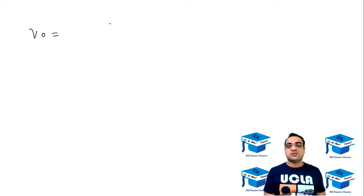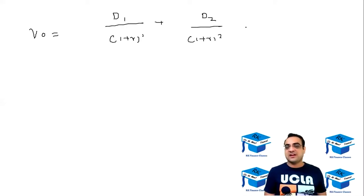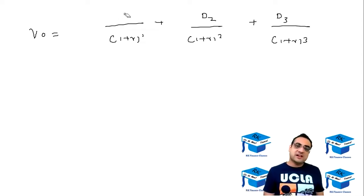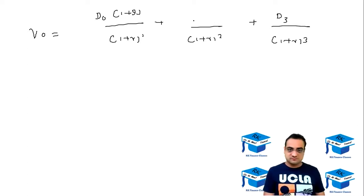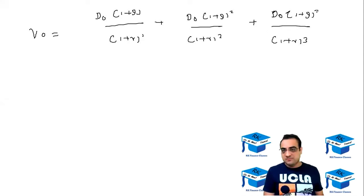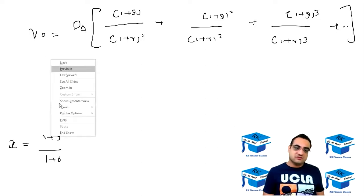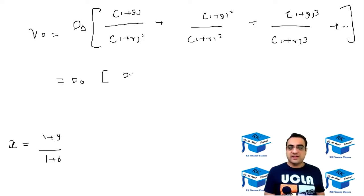V0 equals D1 taken back by one year, plus D2 taken back by two years, plus D3 taken back by three years, and so on forever. D1 is replaced by D0 into one plus g, D2 is D0 into one plus g squared, D3 is D0 into one plus g cubed, and so forth. We take D0 out, and using x equal to one plus g upon one plus r, the series becomes D0 times x, x squared, x cubed, and so on.